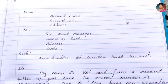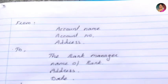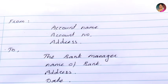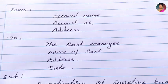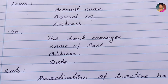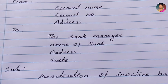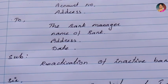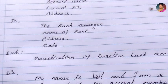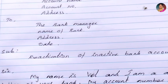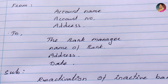I'm going to write a letter. You have to write an ID proof letter. You can use it to reactivate your account. How can you write this letter? First, write your name in the 'From' field. The name is written at the top.